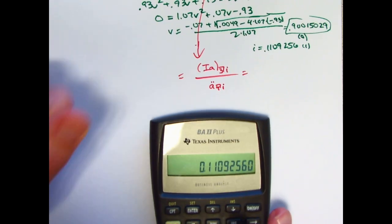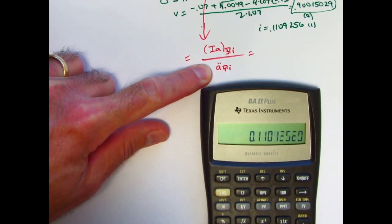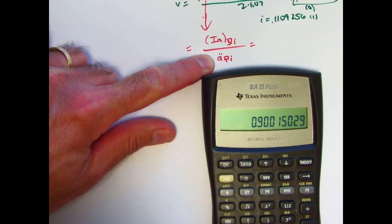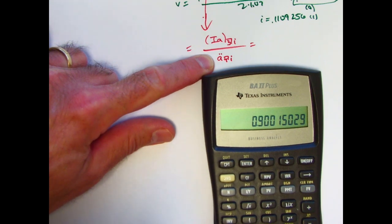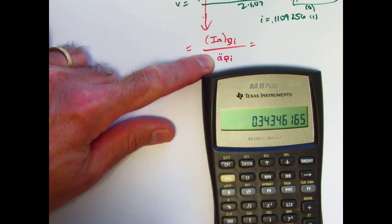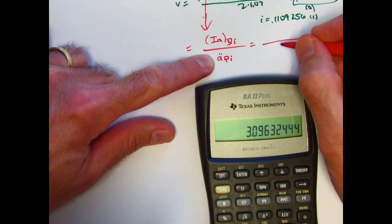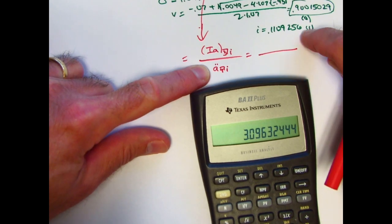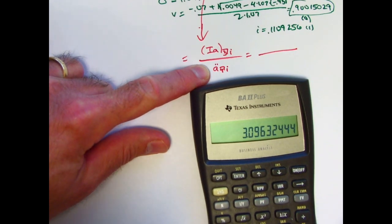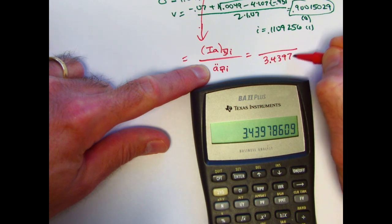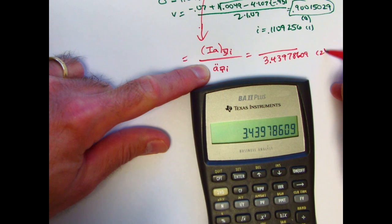This one's the easier one to find. So again, we want to have v here. I'm going to find first a4 without the double dots. I'm thinking of it as annuity immediate, and then I'll multiply by 1 plus i. So there's v, raise it to the fourth power, subtract from 1, divide by i, which was in register 1. The bottom of this fraction is, well, not quite. I almost forgot. I've got to multiply by 1 plus i. 1.1109256 times itself. That's the correct answer. This is 3.43978609. That's what goes in the bottom. I'll store that in register 2.